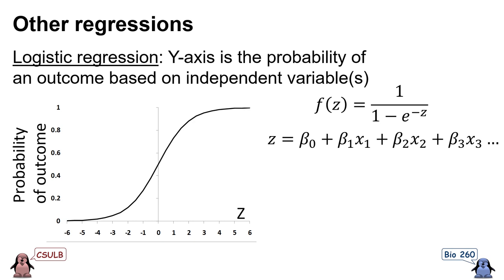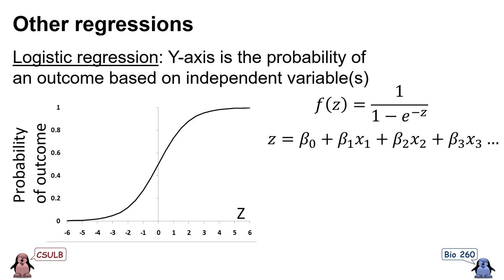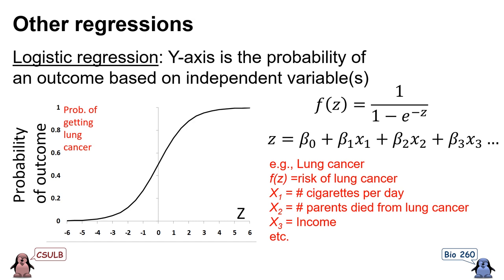Another type of regression is logistic regression. In this kind of regression, the y-axis is not an independent variable — it is a probability of an outcome related to one or more independent variables, given by the equation 1 over 1 minus e to the negative z. For example, if we were trying to estimate an individual's probability of getting lung cancer, the independent variables could include the number of cigarettes they smoke each day, the number of their parents who died from lung cancer as a proxy for genetic risk, and their income — where we expect a negative relationship because lower-income people tend to have higher rates of cancer.